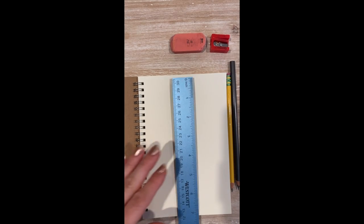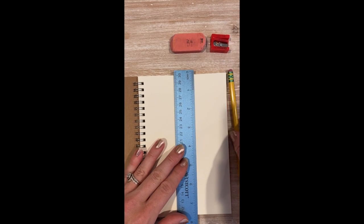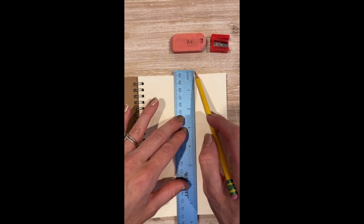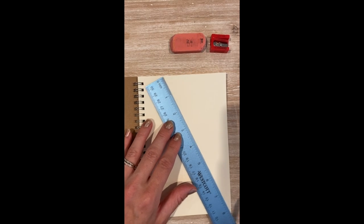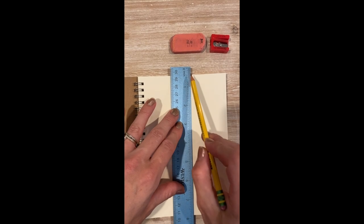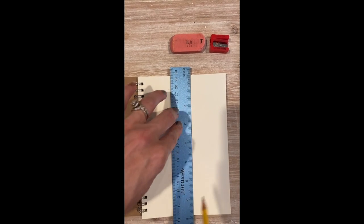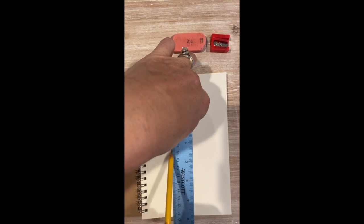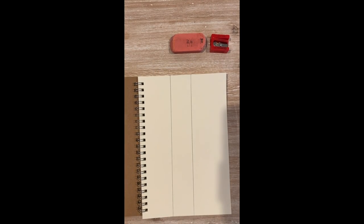We're going to take a ruler and your number two pencil and outline it. Let's see, it only fits eight inches diagonal. So we'll just go straight up and down on both sides so you get a long rectangle.